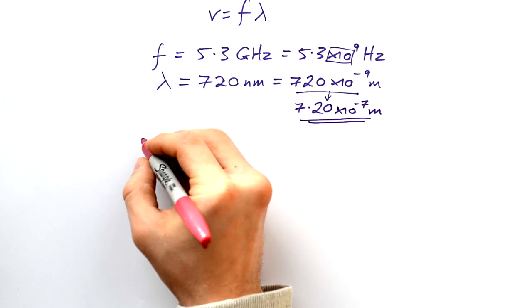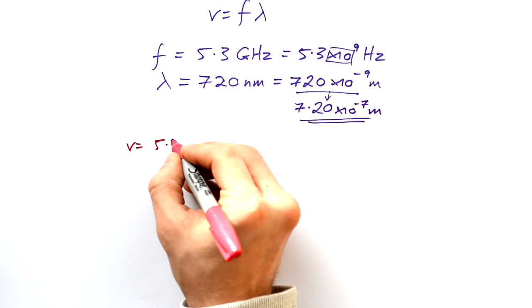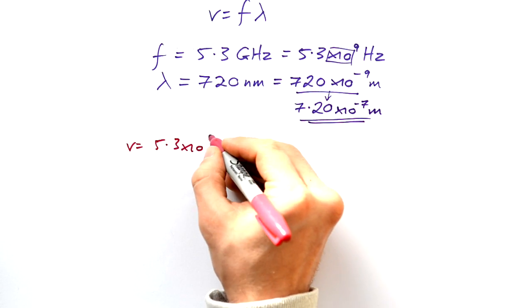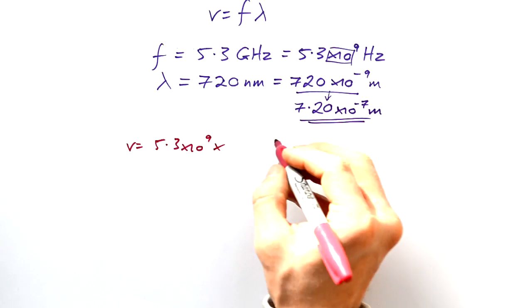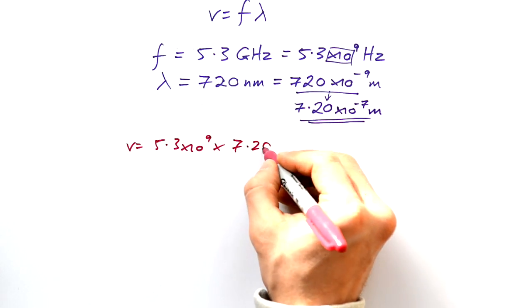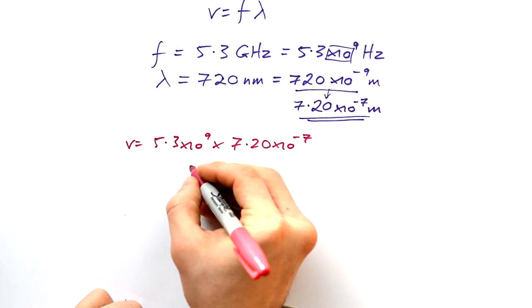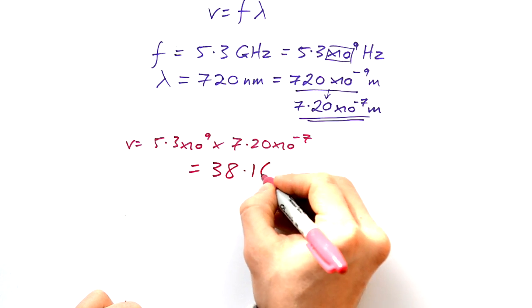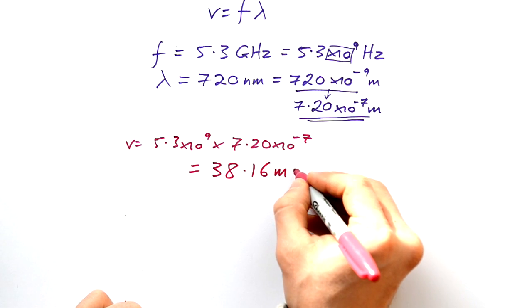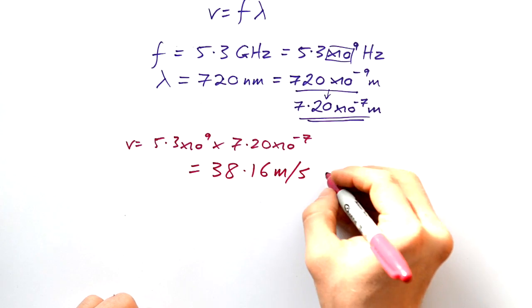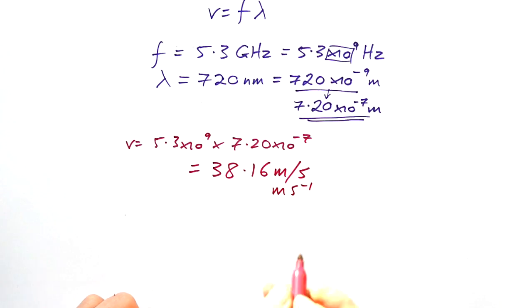So let's times these numbers together to find our speed. 5.3 times 10 to the 9, just going to pop that into my calculator, times 7.20 times 10 to the minus 7. And that gives me a wave speed of 38.16 meters per second. I can write it like that, or I can write it with m s^-1 because, as we know, anything to the minus power means divide.